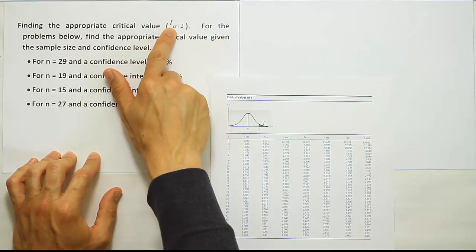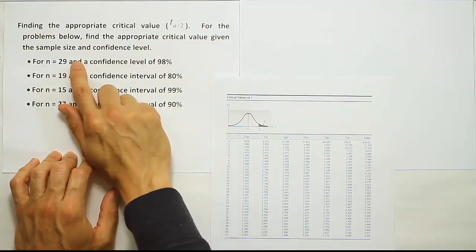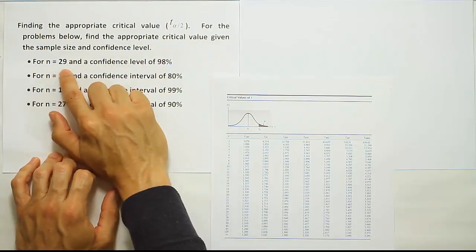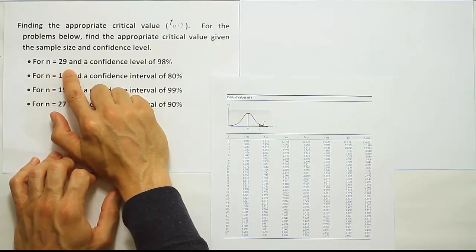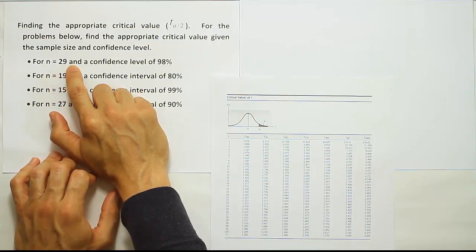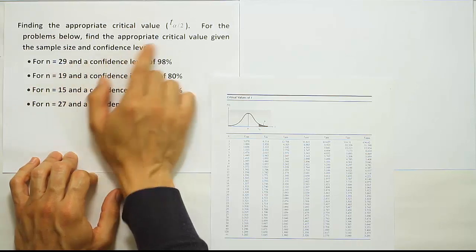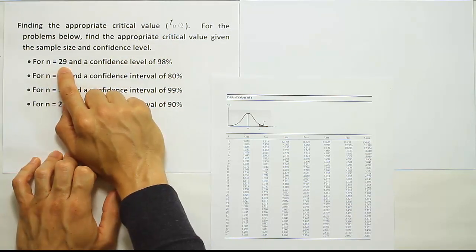Recall that when you're dealing with T values, you have to consider the degrees of freedom. Degrees of freedom are based on the sample sizes. For example, in this first problem, n is 29, so the degrees of freedom would be 28 — we just take one away from the sample size. Whenever you're working with a T value, you have to know the degrees of freedom.